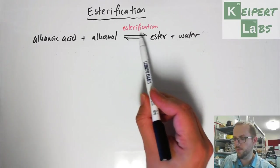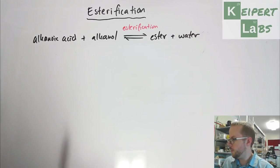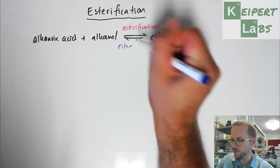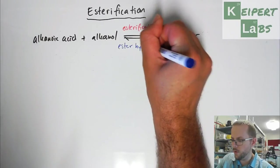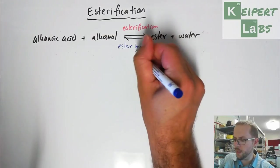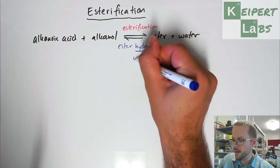That is, we have one process going forwards to make an ester. What we also have is that this process can carry out in reverse. And so the reverse reaction, the reverse process, we call ester hydrolysis. So hydro being water, lysis meaning cut.